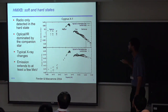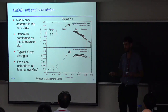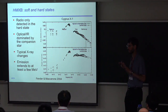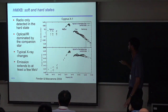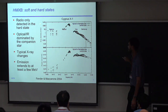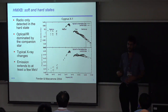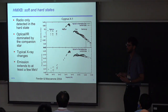The first thing to point out is that radio is only detected in the hard state. When you go to the soft state with just the thermal disk component, that does not seem to produce a jet, so you don't see any radio emission. In the hard state you have radio emission from the jet, while in the soft state it's gone. Also, since this is a high-mass X-ray binary, the infrared and optical lie right on top of each other because the emission is all from the companion, and the companion emission doesn't change significantly between the two states.